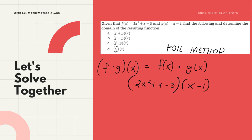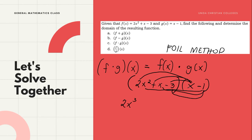Starting with x times each term of f(x): x times 2x² = 2x³, x times x = x², and x times negative 3 = negative 3x. Then, negative 1 times each term: negative 1 times 2x² = negative 2x², negative 1 times x = negative x, and negative 1 times negative 3 = positive 3.